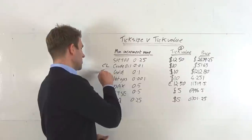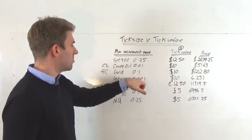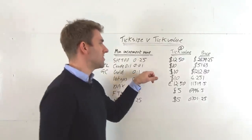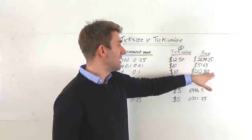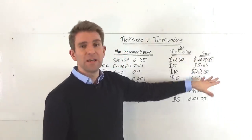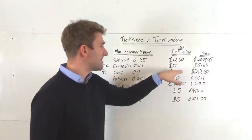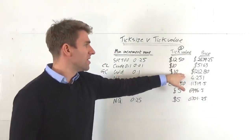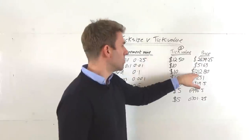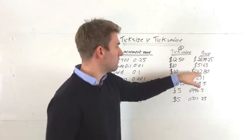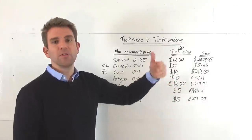Gold — the code for this one is GC. There is a mini, but the most popular one is GC. The minimum increment move is 0.1, so $0.10. The current price is $1,212.80. The next tick up will be $1,212.90, down will be $1,212.70. The minimum tick is 0.1 and the tick value is $10. If that's going to move one full point — one full dollar to $1,213.80 — it'll be $100.